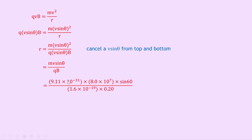Now we substitute in the numbers. We have the mass of the electron 9.11 times 10 to the minus 31, times 8 times 10 to the 7 for the speed, times sine of 60, divided by 1.6 times 10 to the minus 19 for the charge on the electron, times 0.2 for the magnetic induction. Putting all that into your calculator gives a final answer of 1.97 times 10 to the minus 3 meters.